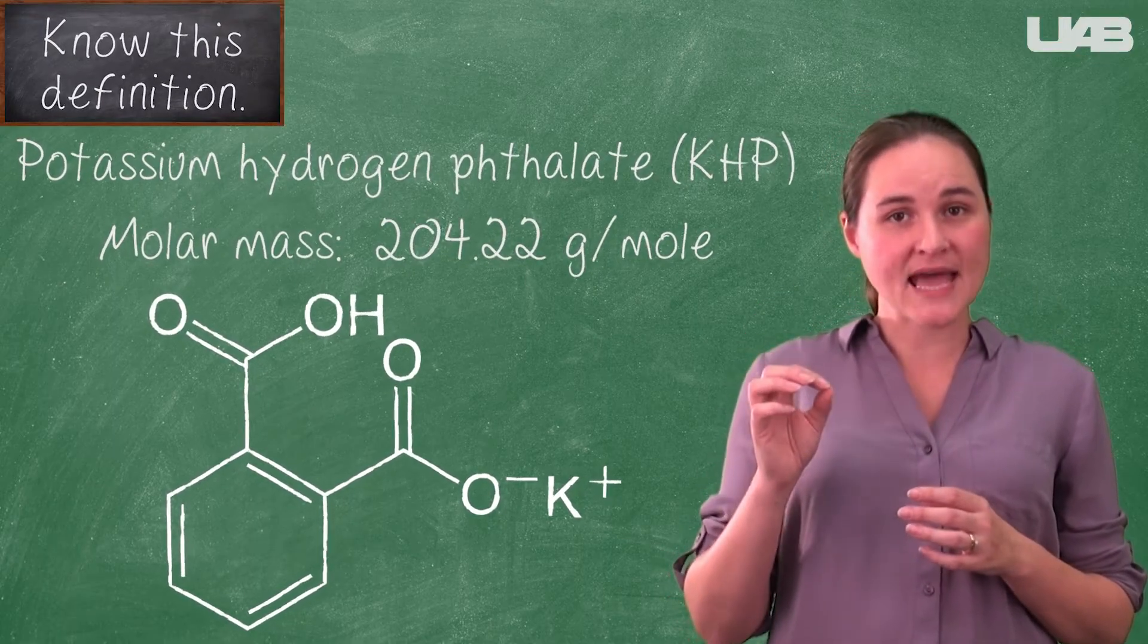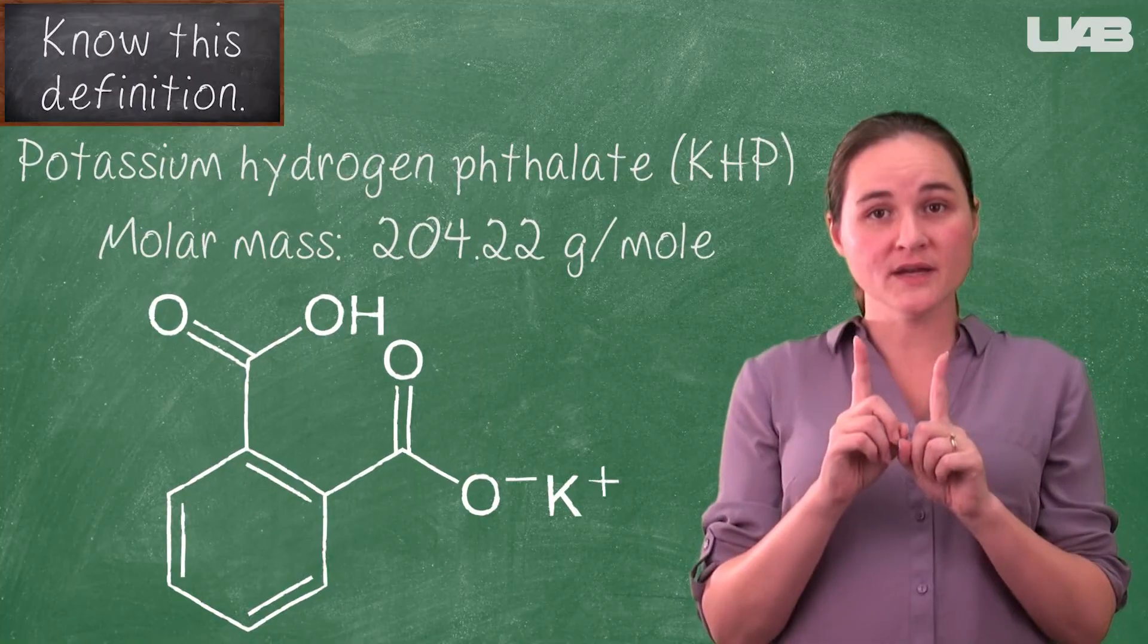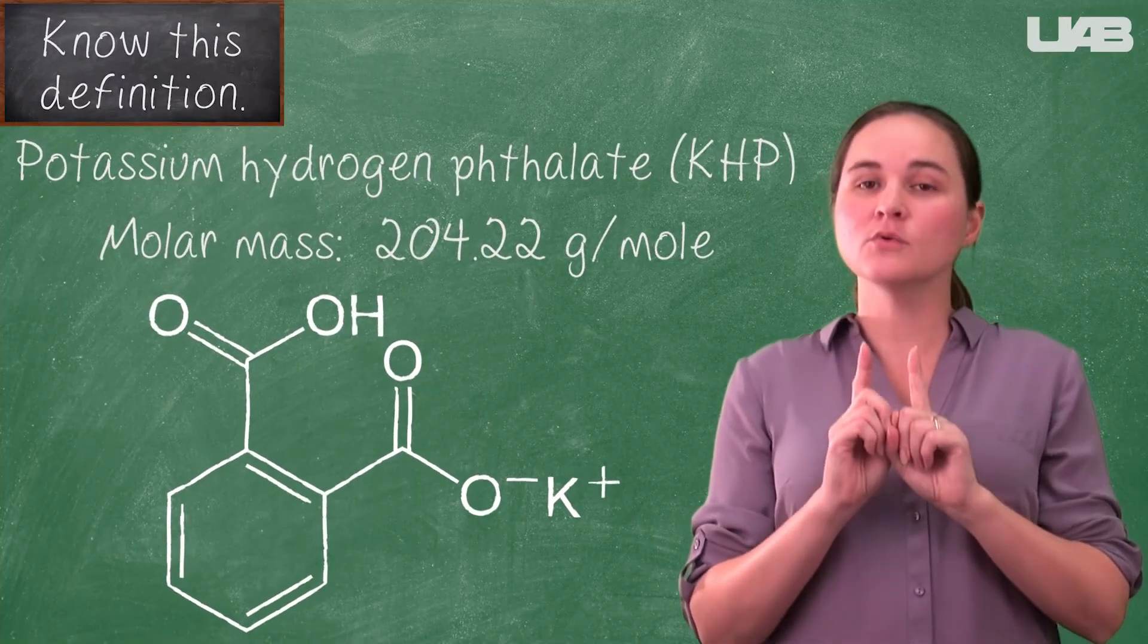A primary standard is a compound that has a very well-known formula and reacts the same way every time. KHP is a monoprotic acid, meaning that only one of the hydrogen atoms on the molecule will act as an acid.